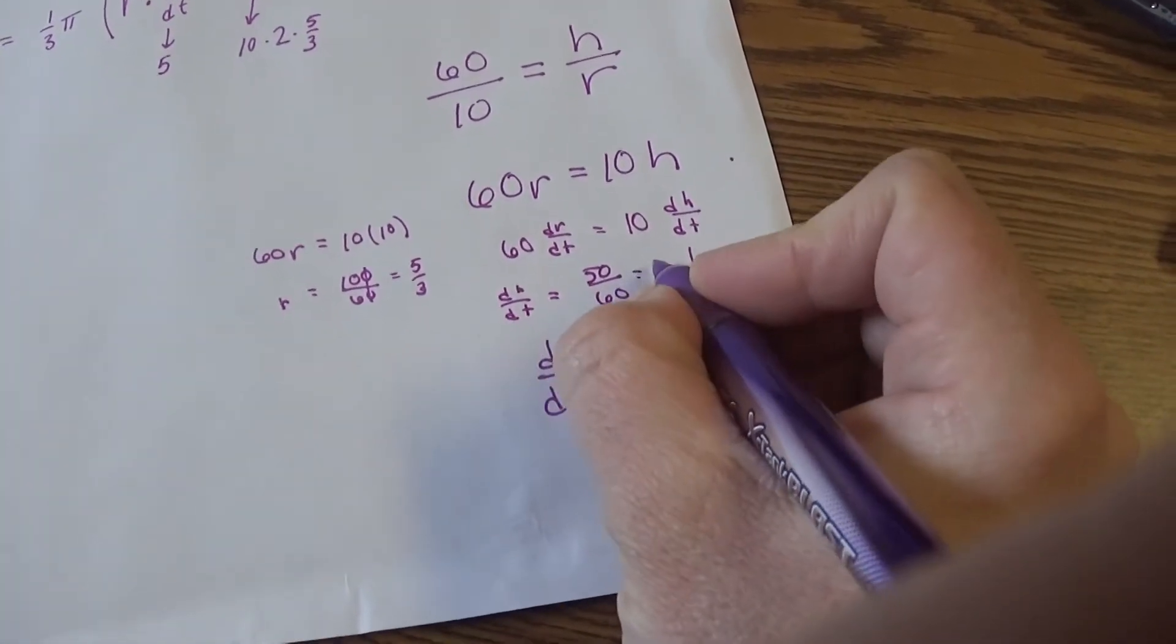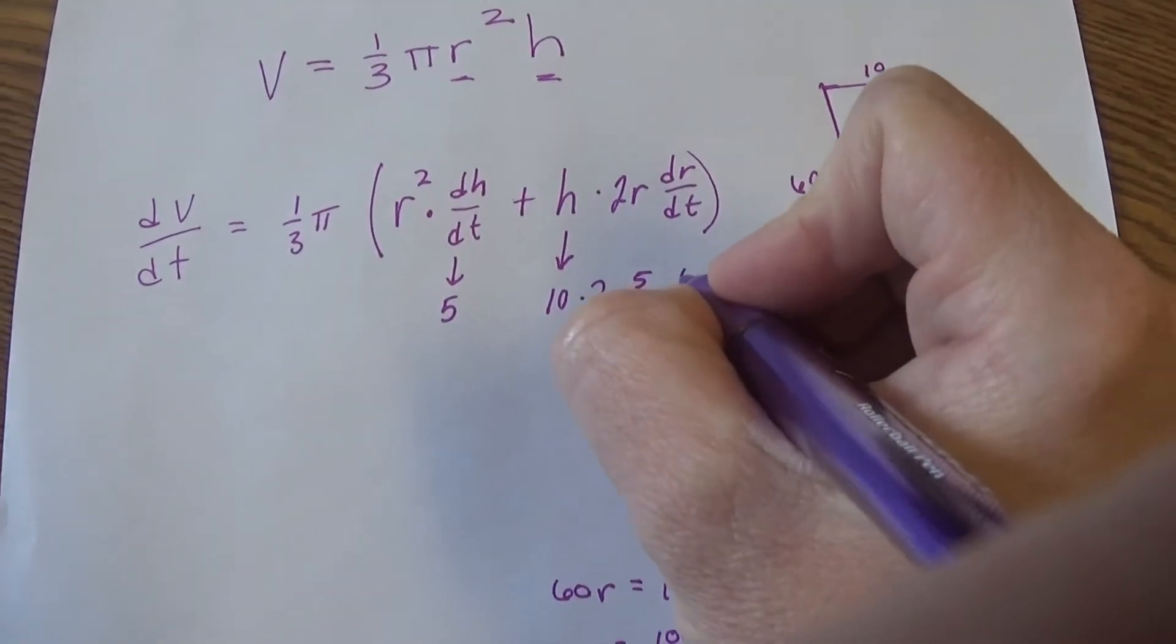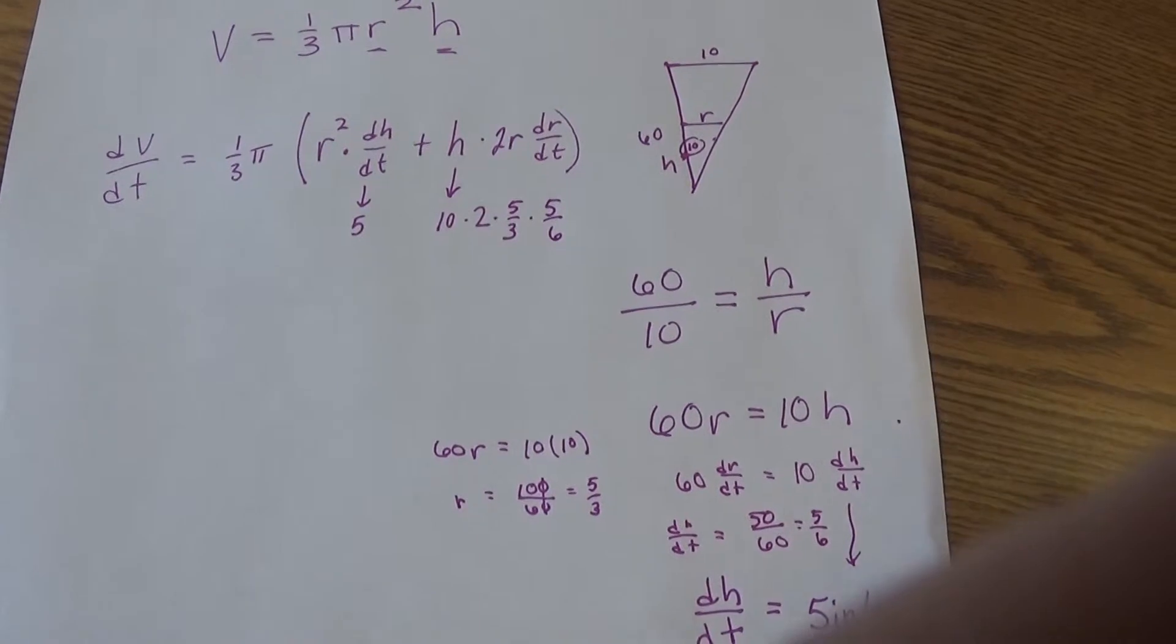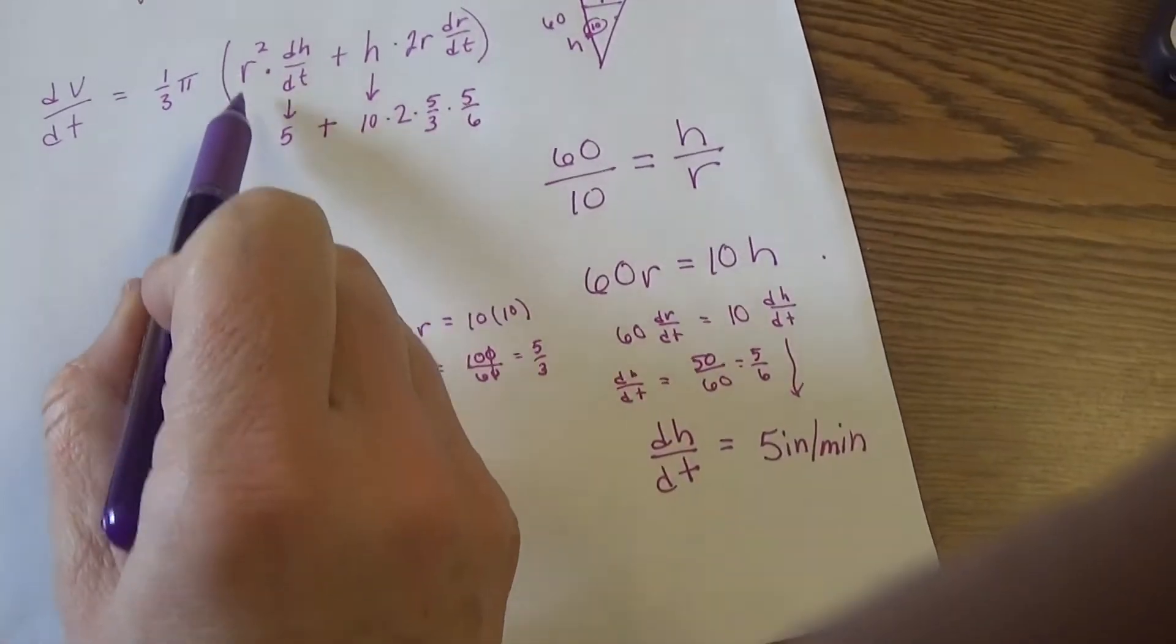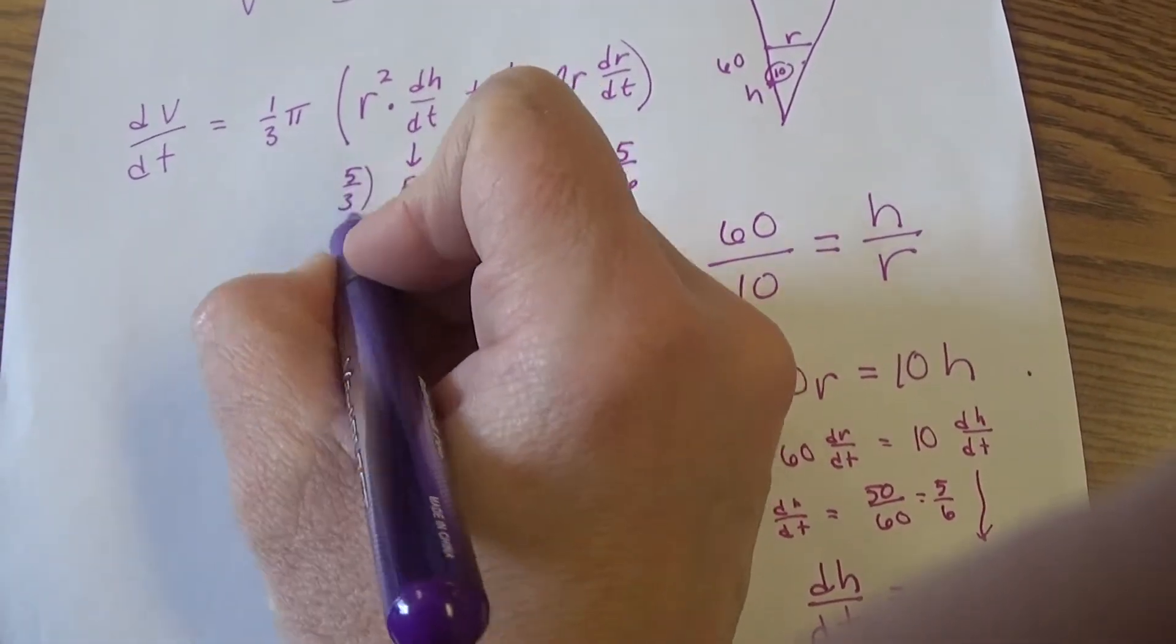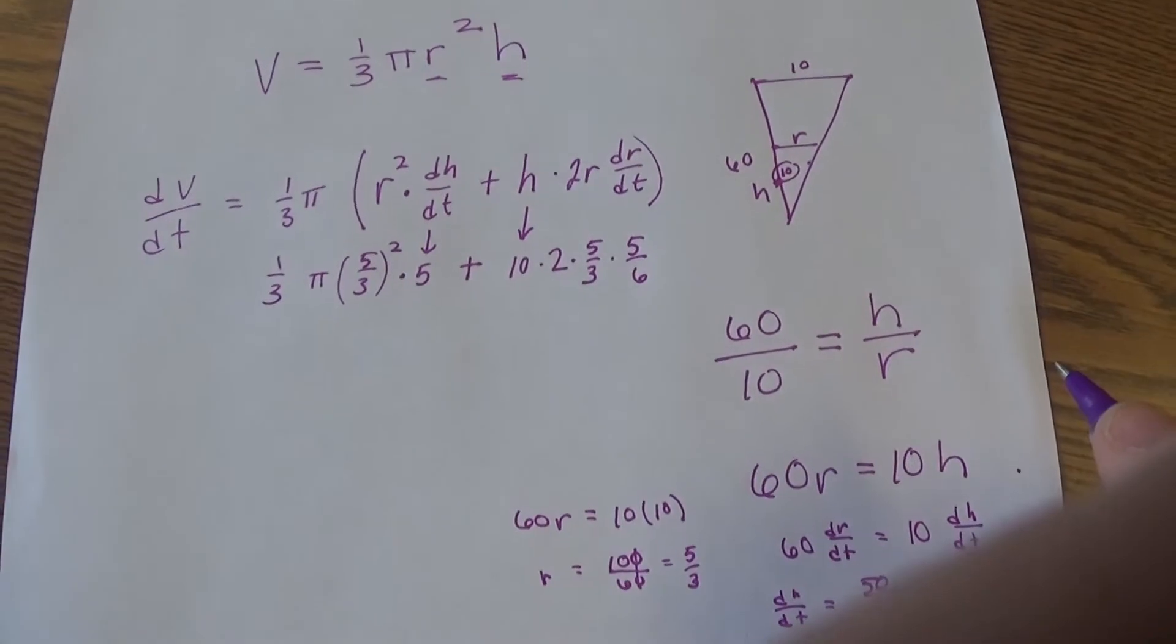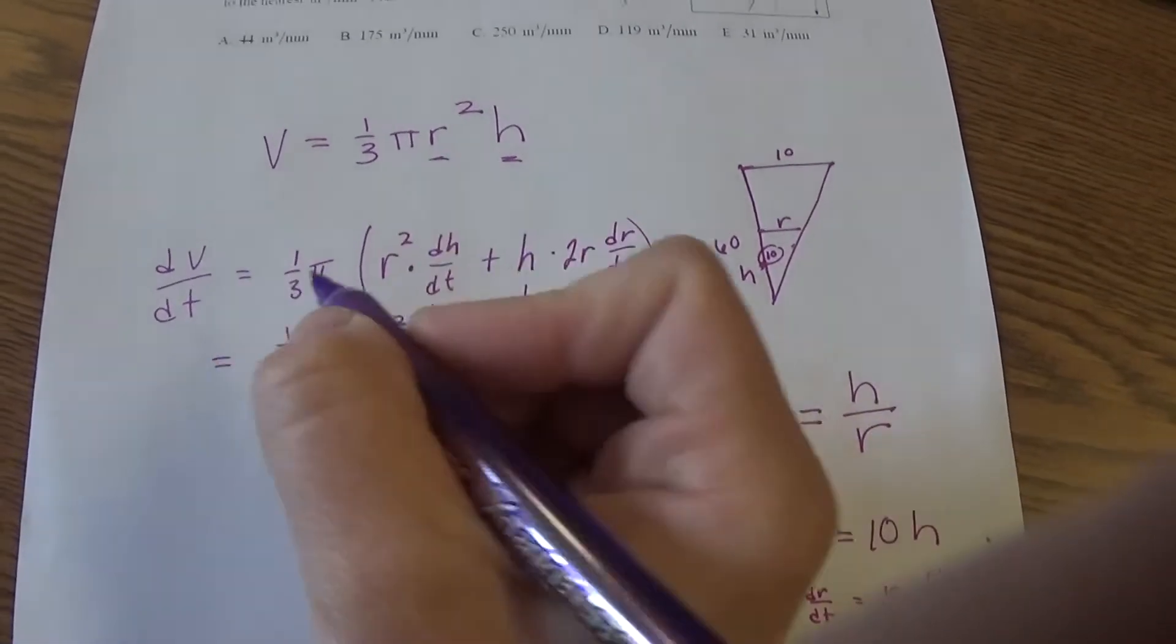So I'm going to rewrite this as 60 dr/dt equals 10 dh/dt. Well, if I know dh/dt is 5 inches per minute, this looks like dr/dt equals 10 times 5 is 50, and then I'm going to divide that 60 over, so I've got 50/60 which is 5/6. So back up to here, I'm going to put in 5/6 for that.